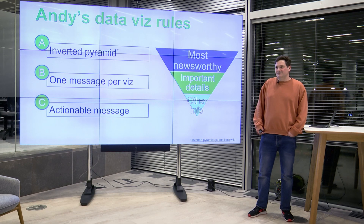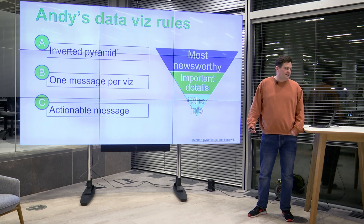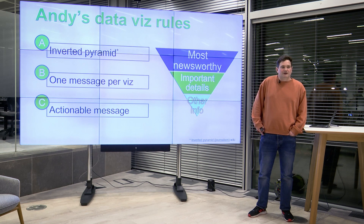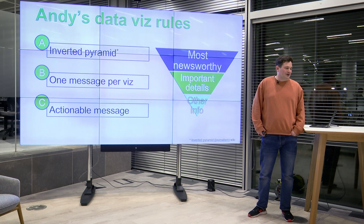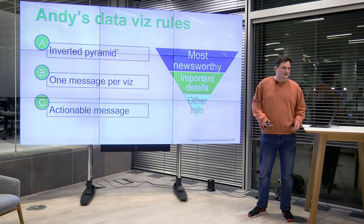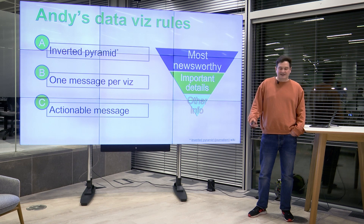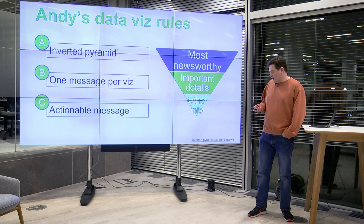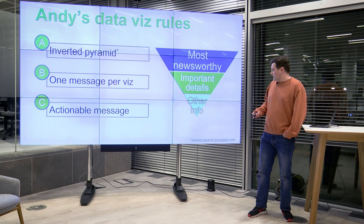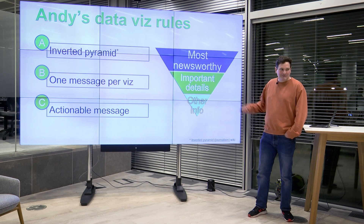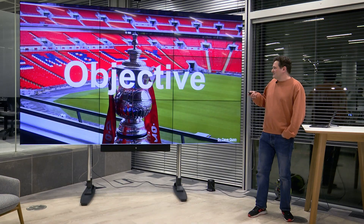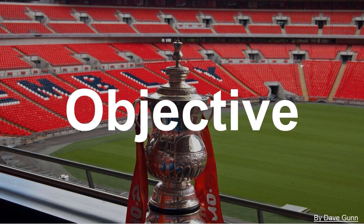The third rule is something a lot of people don't do: have a really actionable message. Sometimes there's a place for just descriptive stats, but if you can actually tell people what to do based on your information, it's a real game changer — and then you can see people making an actual impact. Those are my three rules.